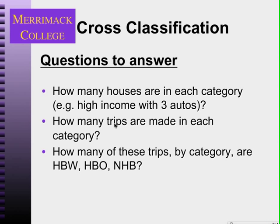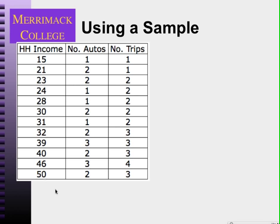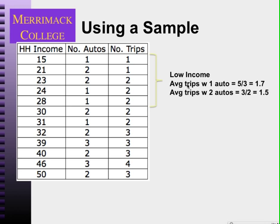Let's do the survey first. Let's say I collected a sample — a simple sample of households in a metropolitan area. I can sort these by income: low income is defined as below $30,000. I can get the average number of trips with one auto, average number of trips with two autos for low-income households, the number of autos, and the number of trips.